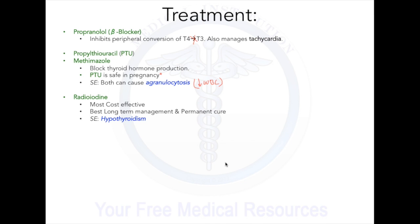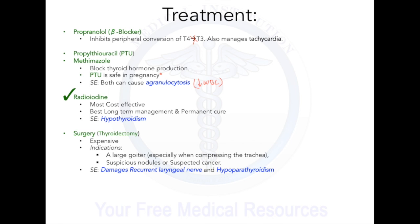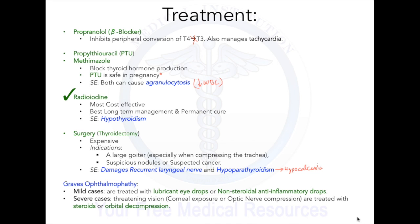We can also use radioiodine, which is the most cost-effective and best long-term management and a permanent cure for Graves' disease, though a major side effect is hypothyroidism since it destroys the entire thyroid gland. Surgery is rarely done unless a large goiter is compressing the trachea or there is a suspicious nodule or cancer. Side effects of surgery include damage to the recurrent laryngeal nerve causing hoarseness or voice loss, and hypoparathyroidism — since the parathyroid glands are on the posterior thyroid — leading to hypocalcemia. For eye manifestations, lubricant or NSAID drops are used for mild cases, and steroids or orbital decompression for severe cases.